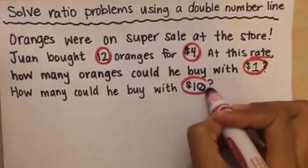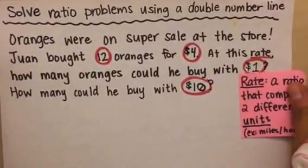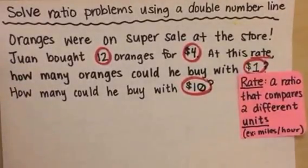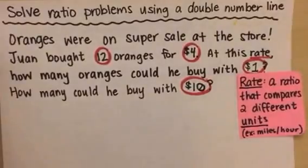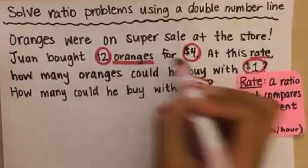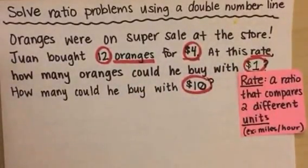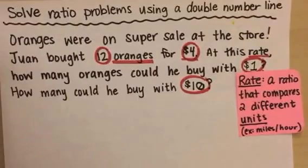All right, so let's get started. Remember that a rate is just a ratio that compares two different units. So an example of a rate would be miles to hour. In this case, our rate is comparing oranges to dollars, so those are our two units.